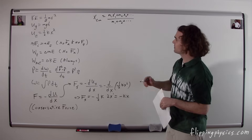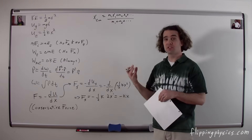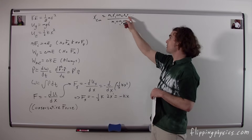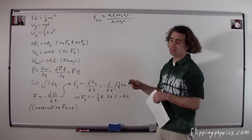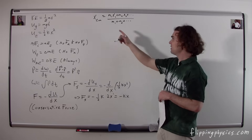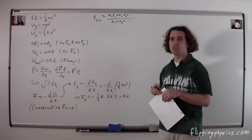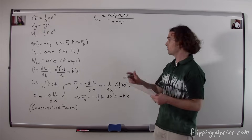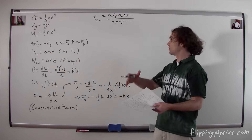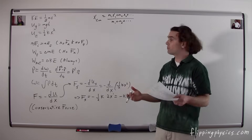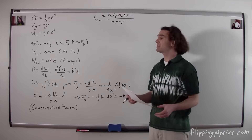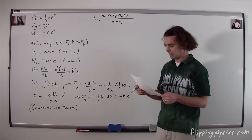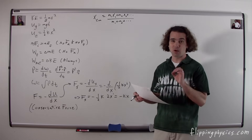Center of mass: the position of the center of mass for a system of particles is (m1*x1 + m2*x2 + ...) divided by the sum of the masses (m1 + m2 + ...), where x1 and x2 are positions relative to a reference line you choose. You can find the x, y, or r position of the center of mass. You can also take the derivative to get the velocity of the center of mass, or the second derivative to get the acceleration of the center of mass.